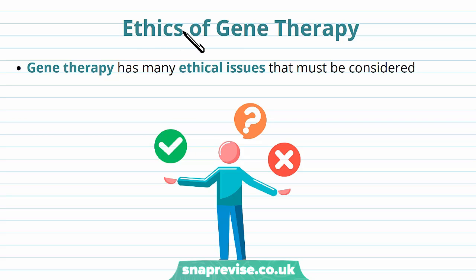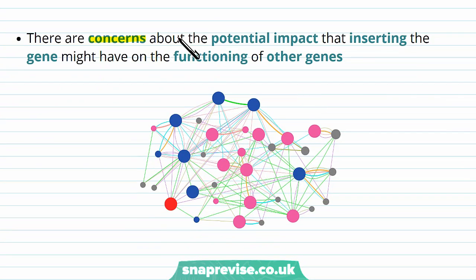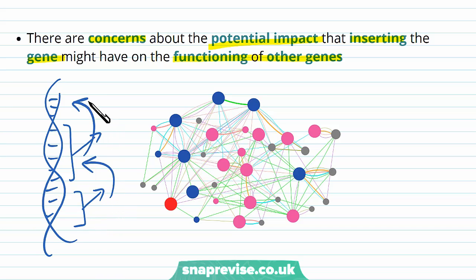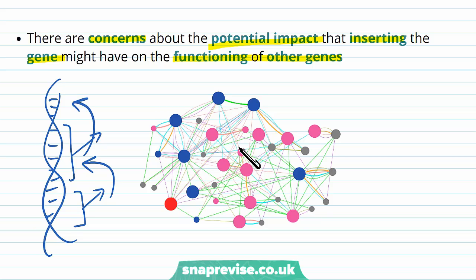There are some ethical concerns around gene therapy. One concern is the potential impact that inserting the gene might have on the functioning of other genes. We often think of genes in isolation, but many genes code for proteins that interact with other genes in a very complicated way, and many genes control the expression of other genes. We don't fully know if the introduction of a healthy allele might interact with other proteins, potentially downregulating healthy proteins.